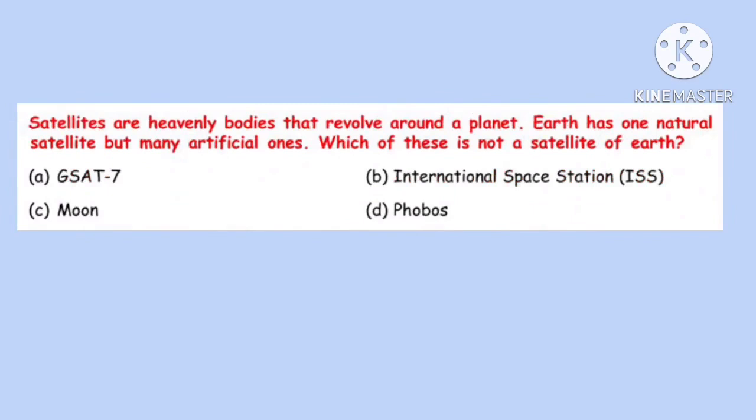Question 26. Satellites are heavenly bodies that revolve around a planet. Earth has one natural satellite but many artificial ones. Which of these is not a satellite of Earth? Correct option is D: Phobos. Phobos is a satellite of Mars.